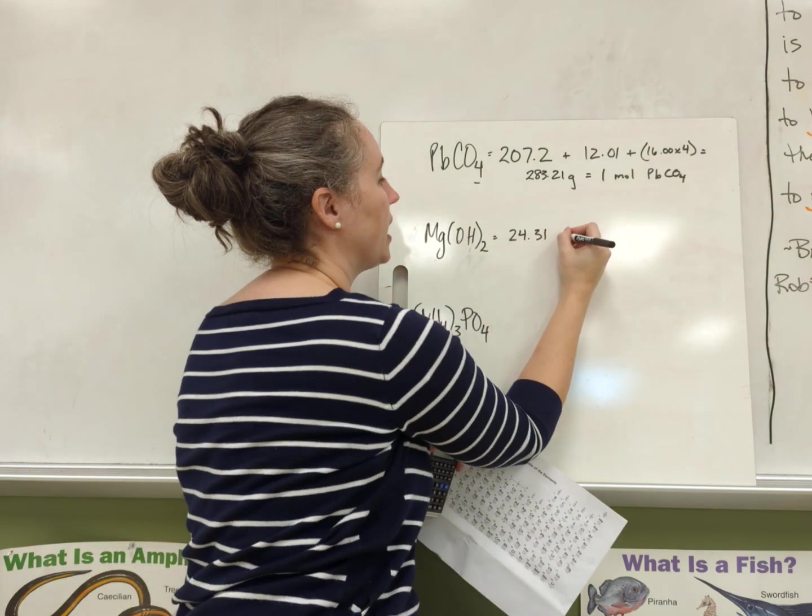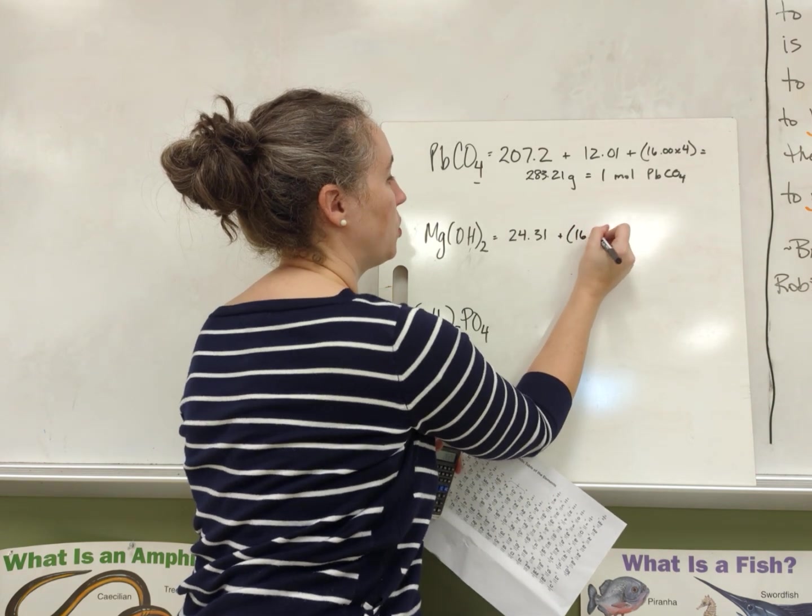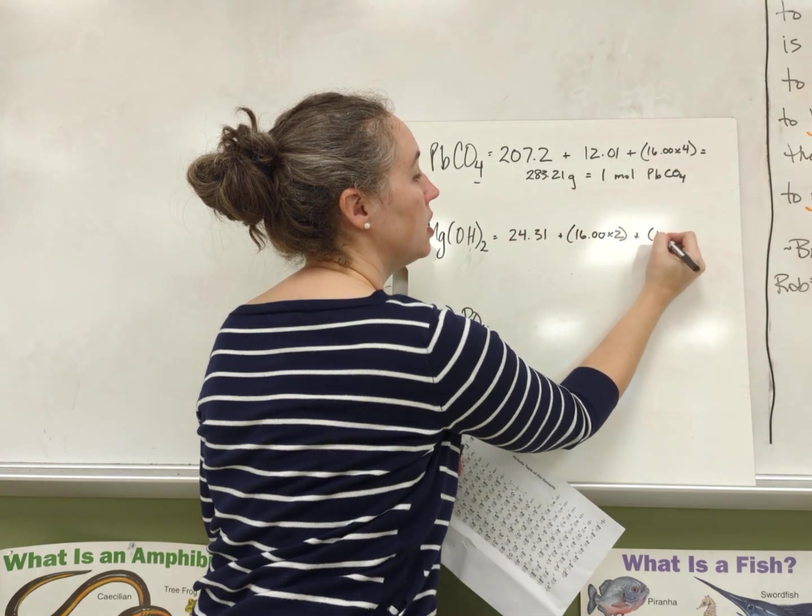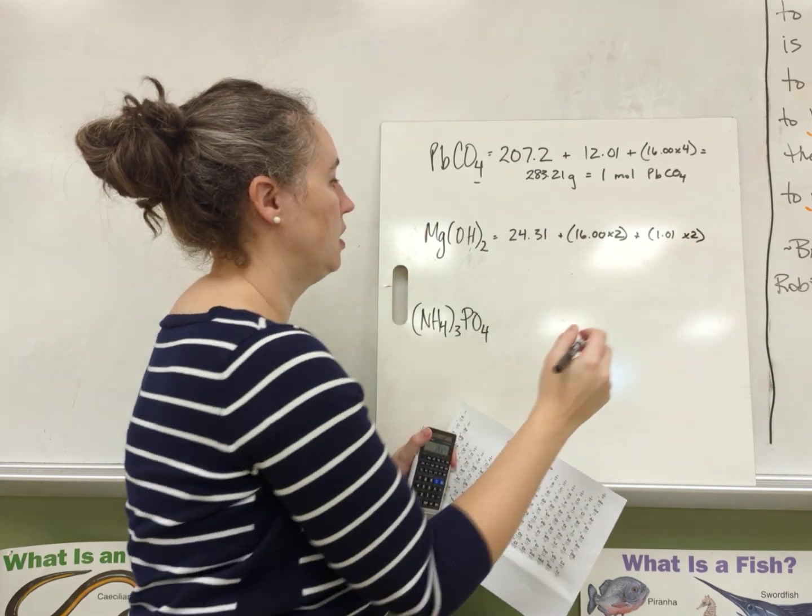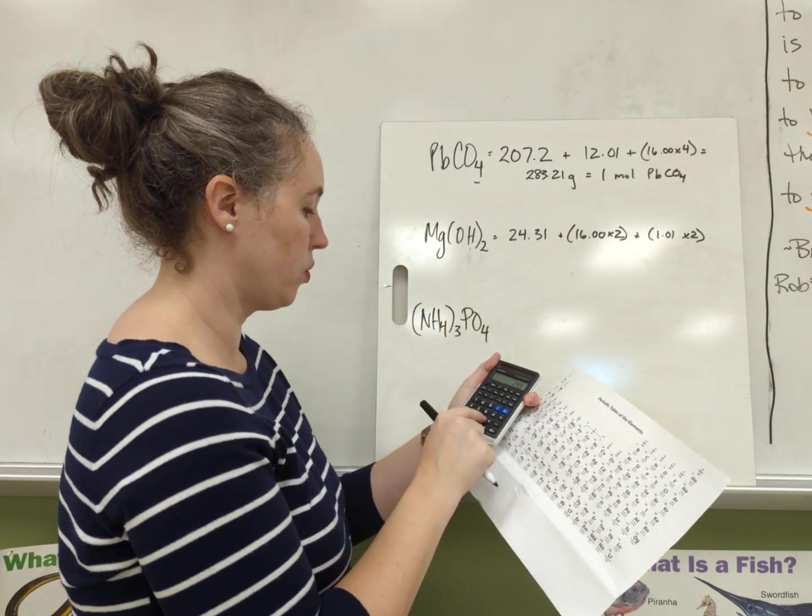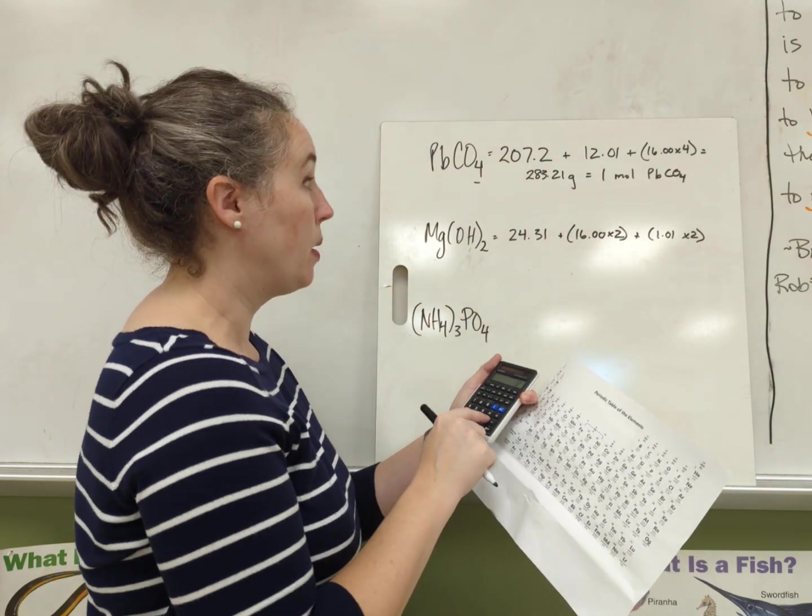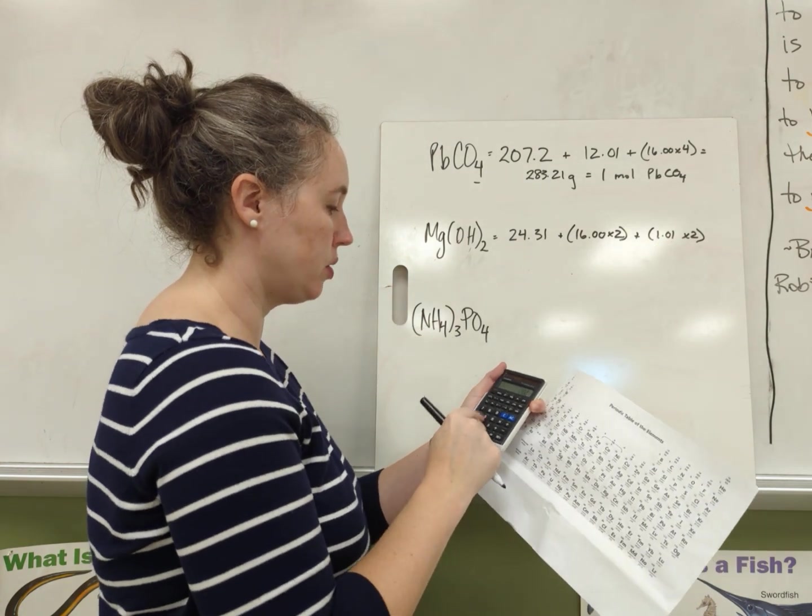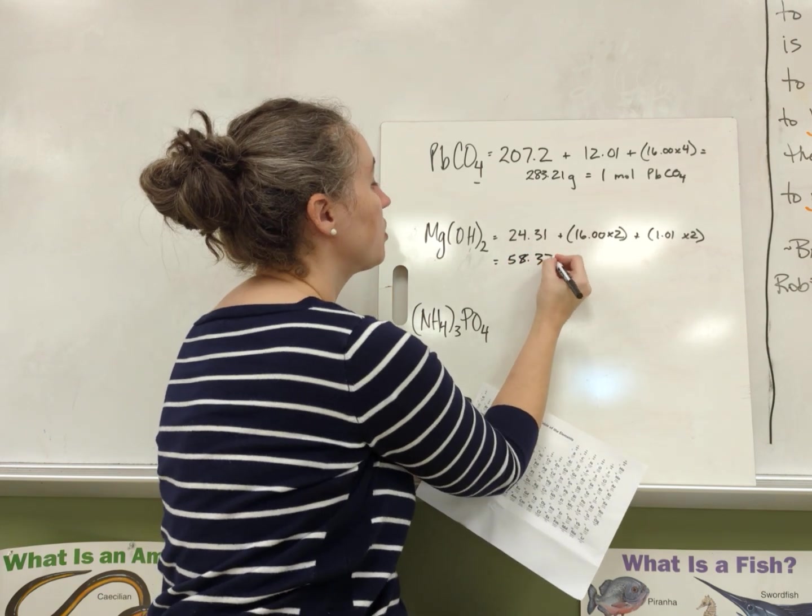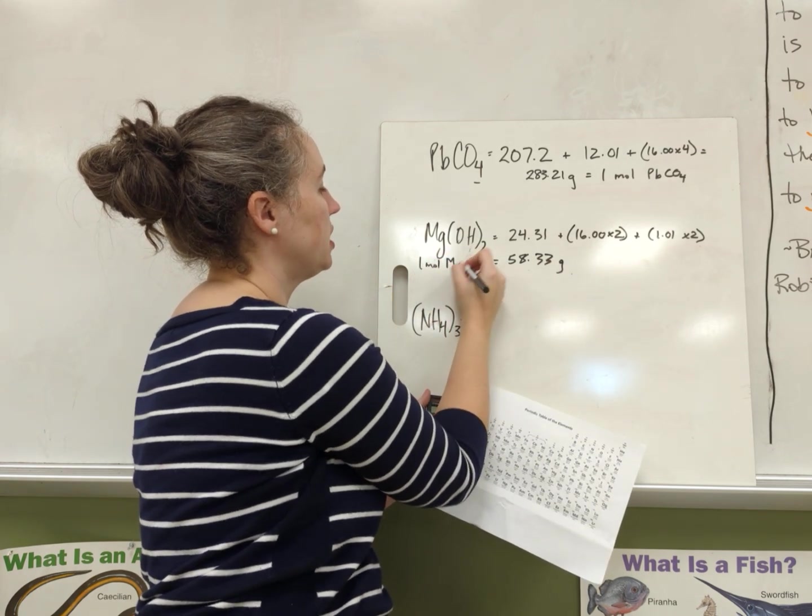So if oxygen is 16, we're going to have 16 times 2. So we'll do 16.00 times 2 plus hydrogen 1.01 times 2. And then let's add it all up. 24.31 for magnesium plus 32 for the two oxygens plus 2.02 for the two hydrogens is 58.33 grams in one mole of Mg(OH)2.